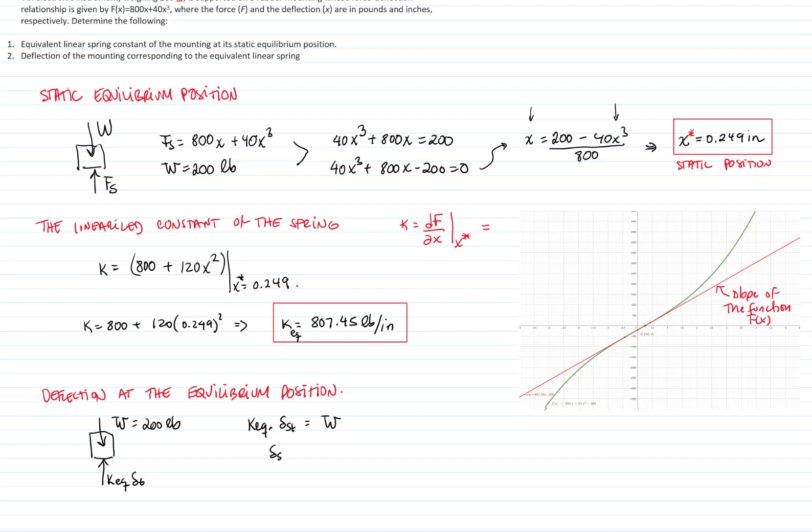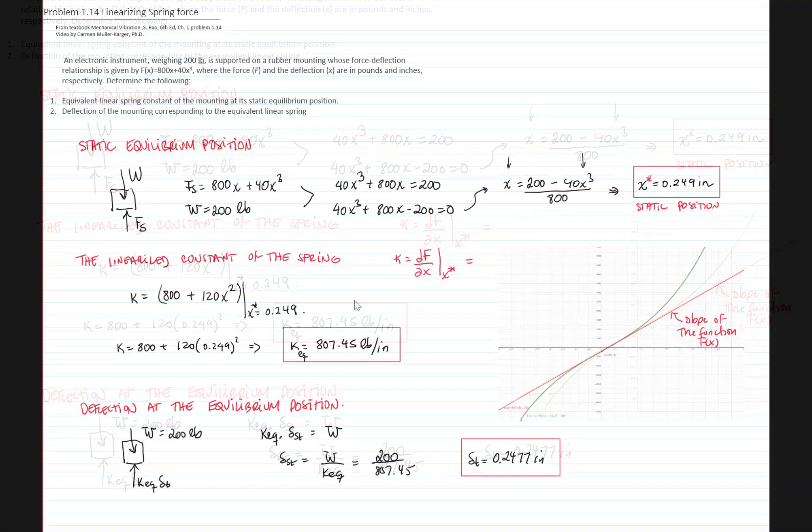The static deflection will be the weight divided by that spring constant, which is 200 divided by 807.45. And therefore, the static deflection equals 0.2477 inches. And that is the deflection at the equilibrium position when the spring has been linearized.